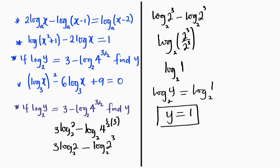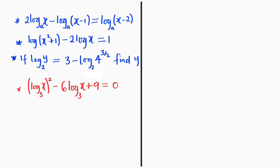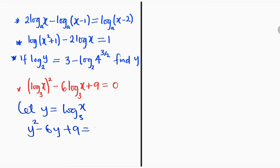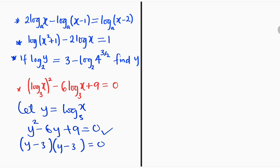Now let us take the final problem. Here is our last problem, and it requires substitution. Let y be equal to log of x base 3. This implies that y² minus 6y + 9 is equal to 0. We have formed a quadratic equation which we can solve by factorization. We need to think of two numbers which when multiplied give positive 9 and when added give negative 6. The numbers are negative 3 and negative 3 — this is a perfect square quadratic equation.